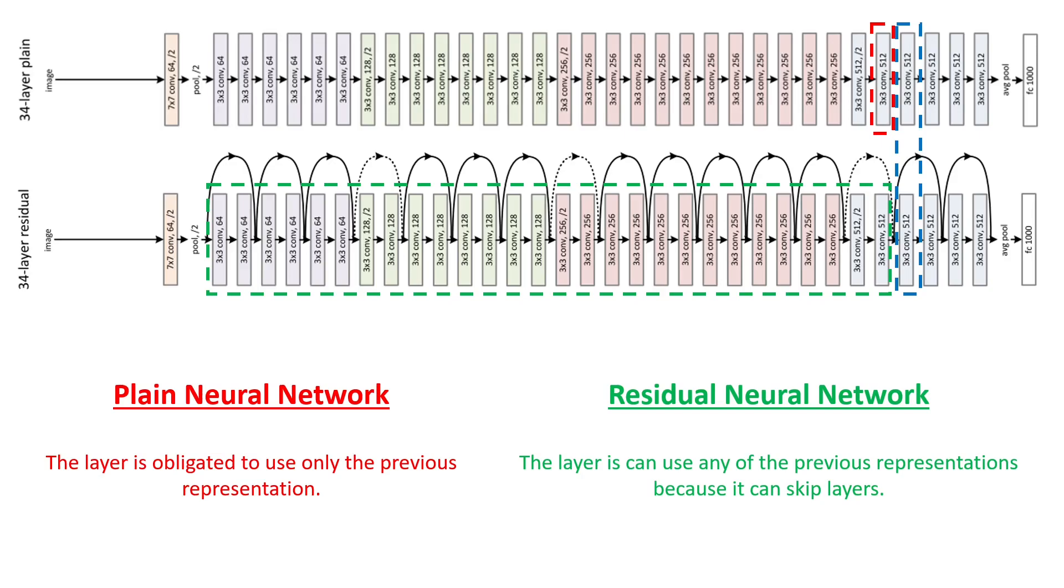And this is exactly what skip connections bring to the table. So by using them, the model is not constrained to use only the previous representation, but it can use any previous representation if it so considers more useful, because again, the skip connection makes it really easy to transfer the same representation from one layer to the other.